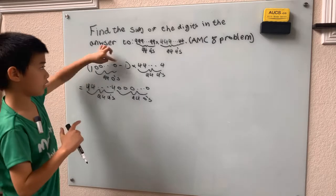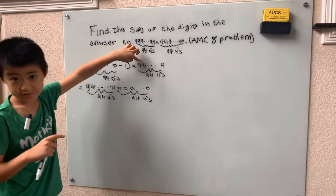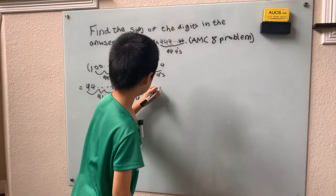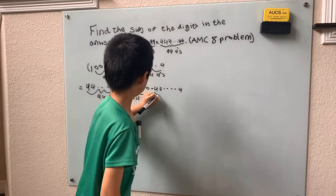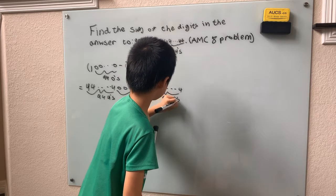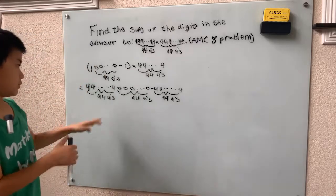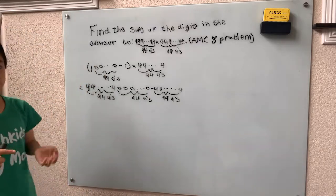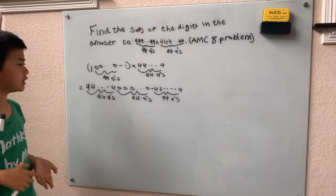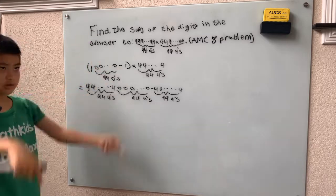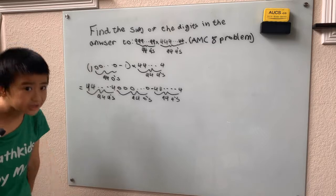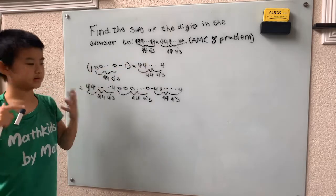Then we subtract off 1 times the 94 fours — that's just the 94-digit number of all fours. We could write down all the digits and do the full arithmetic, borrowing all the way through, and eventually get the answer and add up all those digits. But we came here to do a little bit of work, not a lot of work.